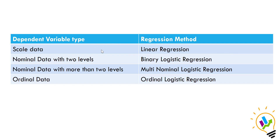If the dependent variable is nominal with exactly two levels, you use binary logistic regression. If the dependent variable is nominal with more than two levels, you use multinomial logistic regression. If the dependent variable is ordinal data, then you use ordinal logistic regression. So based on the dependent variable's data type and measurement level, the regression method changes.